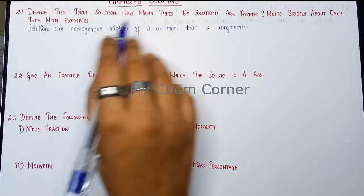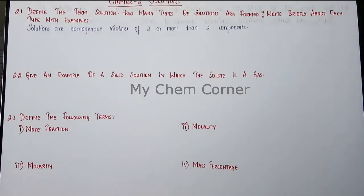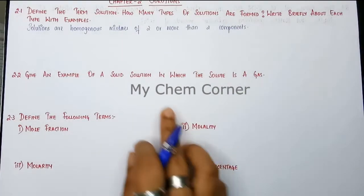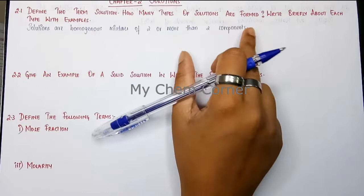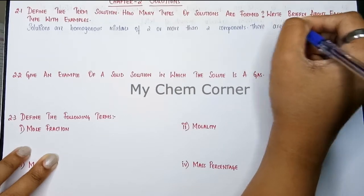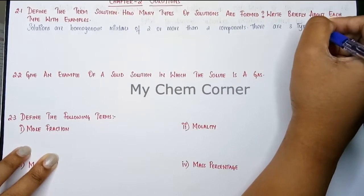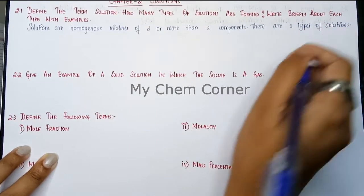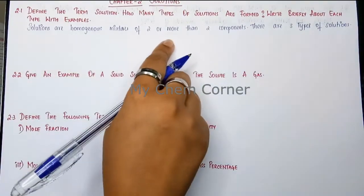How many types of solutions are formed? In the textbook, in the second page of the chapter Solutions, Table 2.1 clearly shows that there are three different types of solutions. There are classifications under them which we will discuss now, but basically there are three types of solutions.